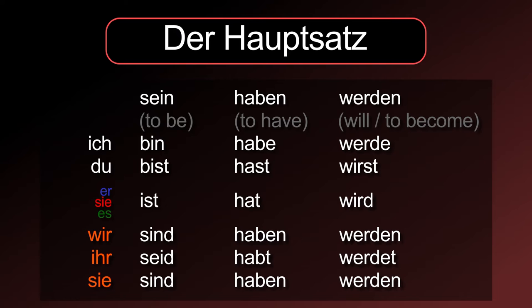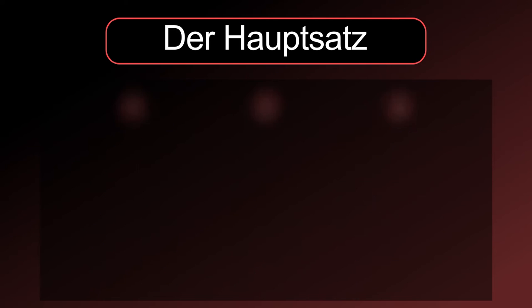A good way to learn the German sentence pattern is by using positions. Position 1 contains the important part — that what you are talking about. You can always remember that verbs are on the second position, and position 3 contains the rest of your sentence.